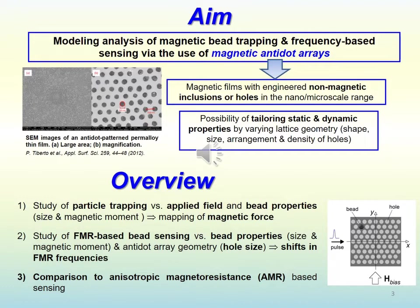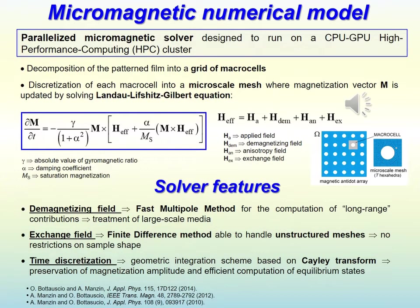Then we analyze the ferromagnetic resonance-based sensing by varying the particle properties and the antidot array lattice geometry. Finally, we compare this novel mechanism of detection with anisotropic magnetoresistance-based sensing. The modeling analysis is performed by using a parallelized micromagnetic solver that was developed to efficiently solve the Landau-Lifshitz-Gilbert equation in large patterned films.